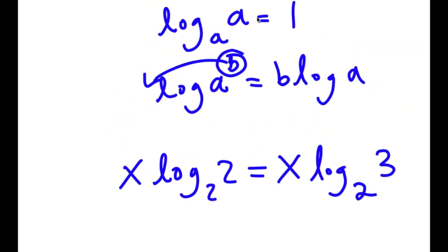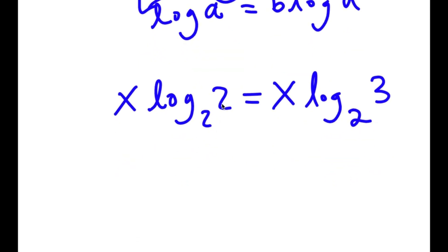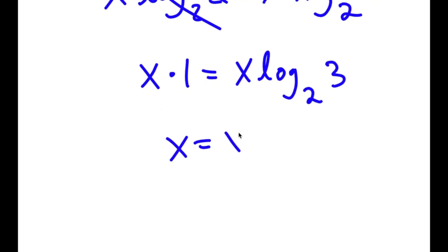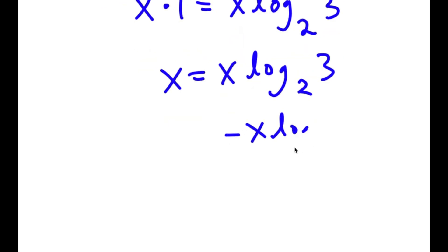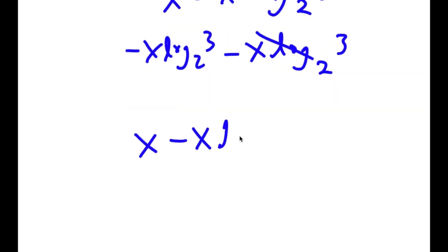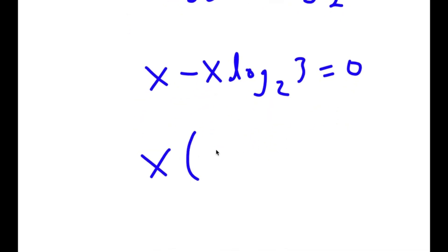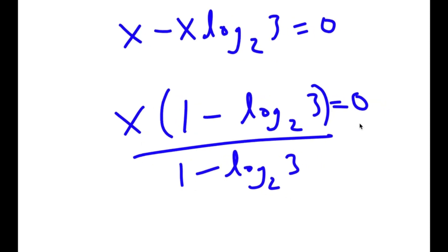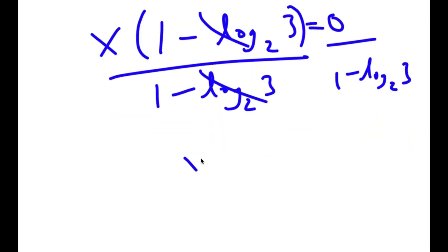Remember, if I have something in the form log base a of a, this is equal to 1. So log base 2 of 2 cancels out, and I'm simply left with x times 1 is equal to x times log base 2 of 3. And x times 1 is simply x, so I get x is equal to x times log base 2 of 3. Now I'm going to subtract x log base 2 of 3 from both sides. So I get x minus x times log base 2 of 3 is equal to 0. Factoring out x gives x times (1 minus log base 2 of 3) equals 0. Dividing both sides by (1 minus log base 2 of 3), I'm left with x is equal to 0.